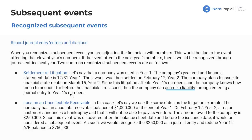Next up, an example for a loss on an uncollectable receivable — sorry, looks like someone who owed you money didn't pay you. Using the same dates as the litigation example: the company has an accounts receivable balance of one million dollars at the end of year one. On February 12, year two, a major customer announces bankruptcy and won't be able to pay its vendors. We are the vendor, and someone owes us money but they're not going to be able to pay us back.